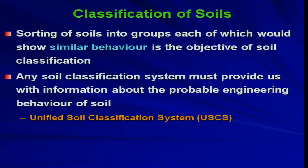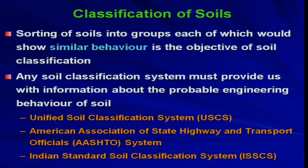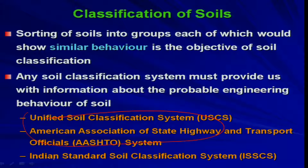There are several soil classification systems available in the world. The first one is the Unified Soil Classification System, known as USCS. Then we have the American Association of State Highway and Transport Officials system, known as the AASHTO system. We also have the Indian Standard Soil Classification System, ISSCS. We will not be concentrating on the first two international systems; rather, we will focus on the Indian Standard Soil Classification System, ISSCS, and see the detailed step-by-step analysis for it.